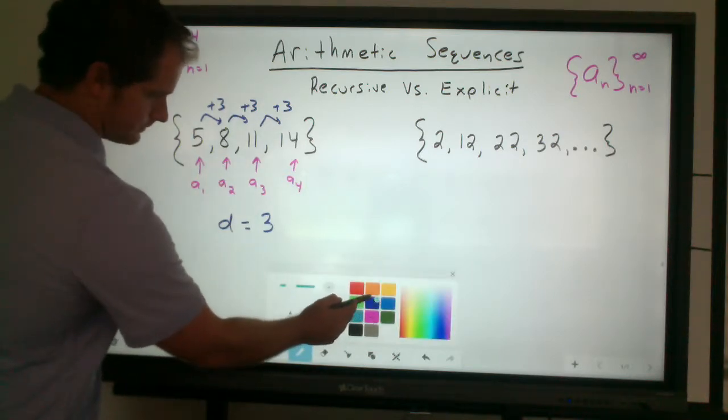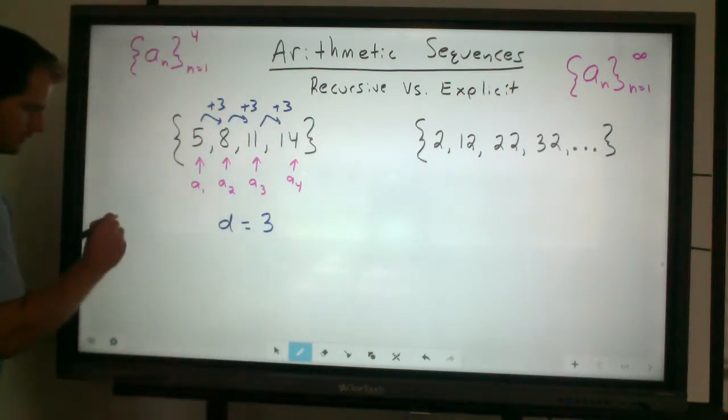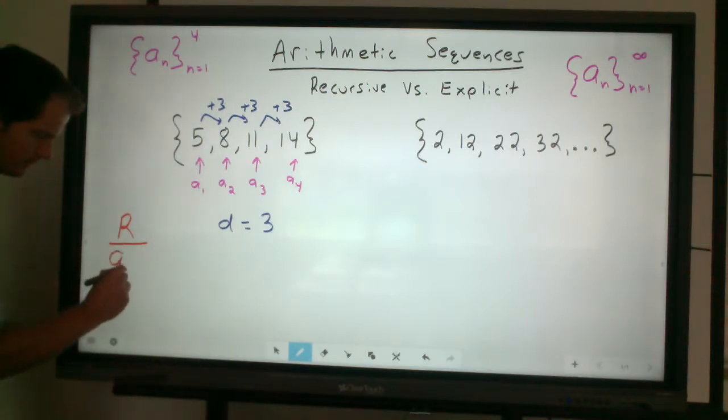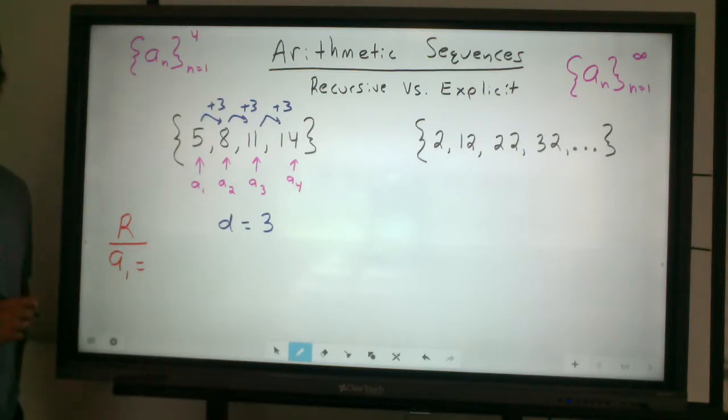To be recursive, there's a few different things we need to do. We need to be able to write out some specifics. To be recursive, or to write a recursive rule, we establish what the first term is first, and that you always have to do. In this case, our first term happens to be 5.